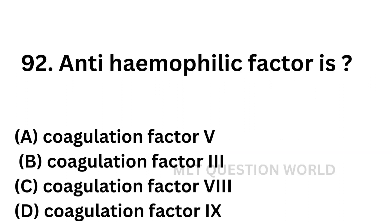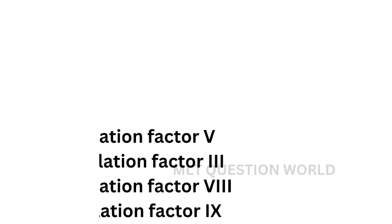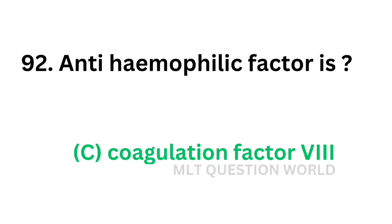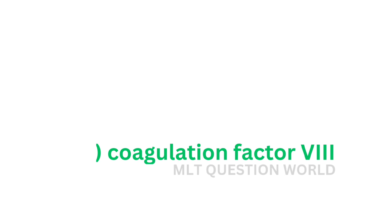Question number 92: Antihemophilic factor is. Option A: coagulation factor 5. Option B: coagulation factor 3. Option C: coagulation factor 8. Option D: coagulation factor 9. There are 13 coagulation factors. Factor 8 is antihemophilic factor A and factor 9 is antihemophilic factor B, also called Christmas factor. So the correct answer is coagulation factor 8 — antihemophilic factor is coagulation factor 8.